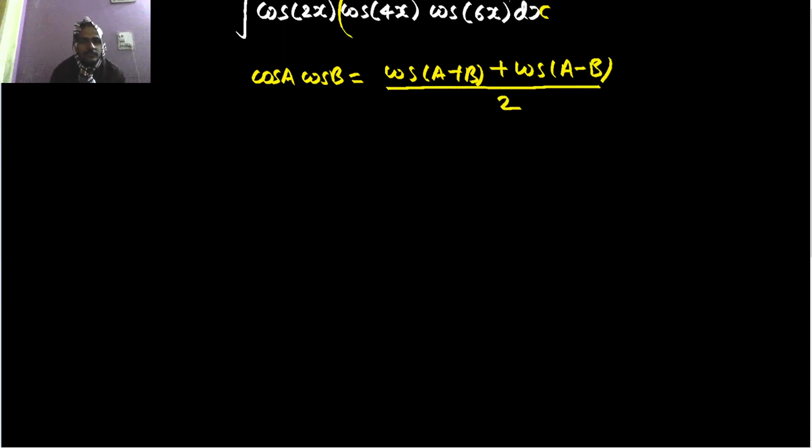So if I club these two—cos 2x and half I can write out—cos 4x cos 6x, I can apply this formula and write this as cos of 4x plus 6x, that is 10x. I am skipping some steps here which you will have to write in case you are writing a subjective paper.